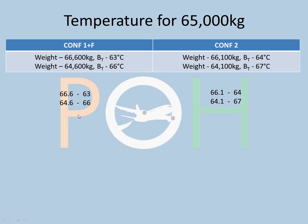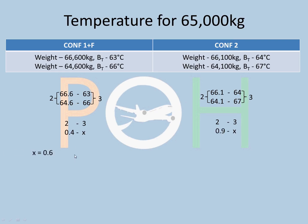For Config 1+F: between 66.6 and 64.6, the weight difference is 2 tons and the temperature difference is 3°C. We need 65 tons, which is 0.4 above 64.6, or equivalently 1.6 below 66.6. For Config 2: similarly, 66.1 and 64.1 give a 2-ton, 3-degree difference, and we need 0.9 tons of adjustment. By cross-multiplication, the corrections come out to 0.6°C and 1.3°C respectively.